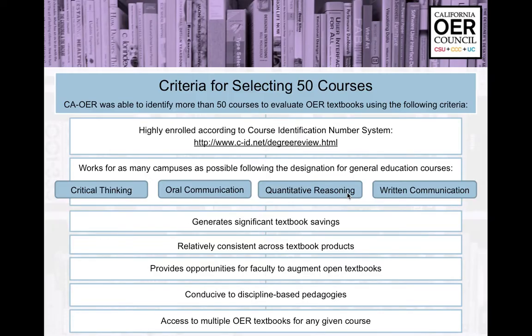We established criteria for selecting the 50 courses using the highly enrolled course identification numbering system. We looked at critical thinking, oral communication, quantitative reasoning, and written communication. Requirements included: it generates significant textbook savings, it's relatively consistent across textbook products, it provides opportunities for faculty to augment open textbooks, it's conducive to discipline-based pedagogies, and there's access to multiple OER textbooks for any given course.